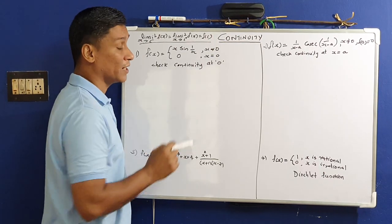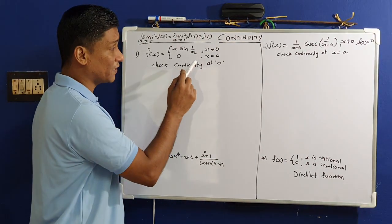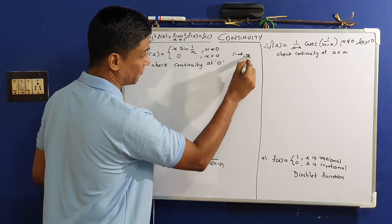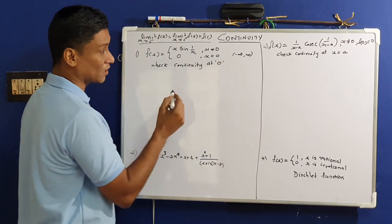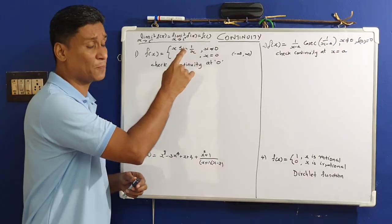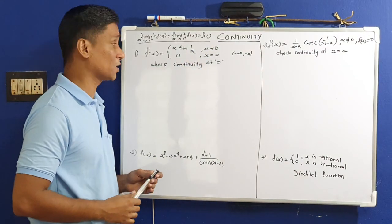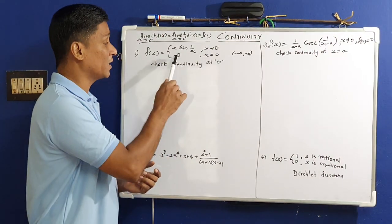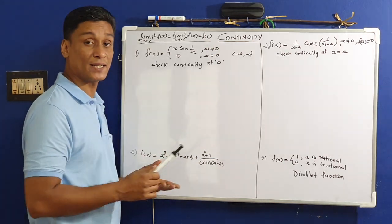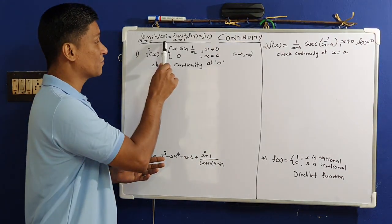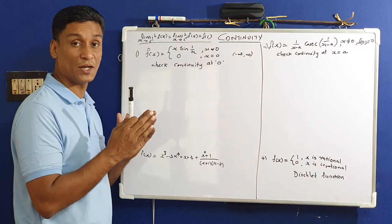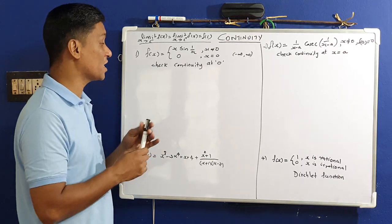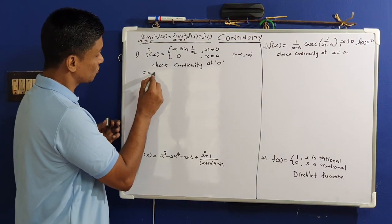Check the continuity at x=0. If you have a function defined on the whole real axis, minus infinity to infinity, we have a function defined. We will check the continuity at 0. Our definition of the function is x·sin(1/x) for all non-zero points, and 0 for the point x equal to 0. So we will check whether both limits are the same and both are equal to f(c), where c equals 0.